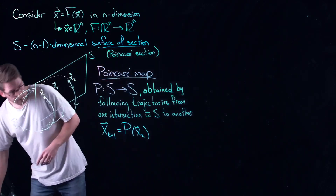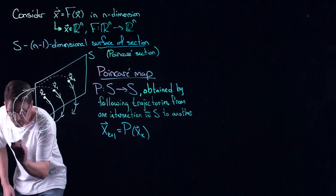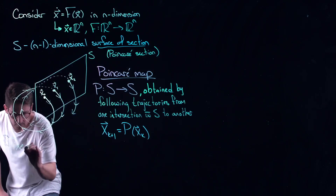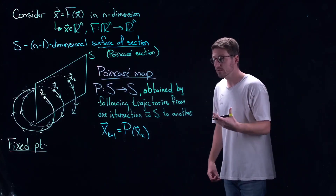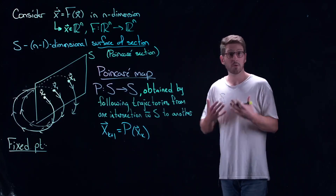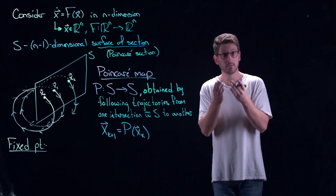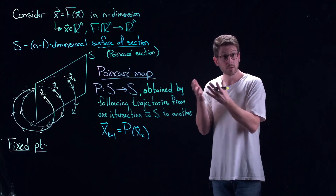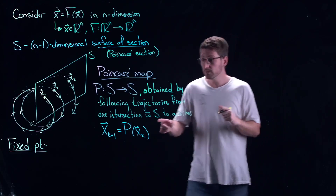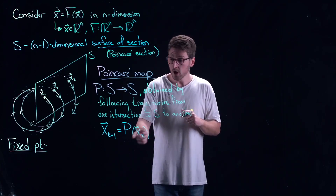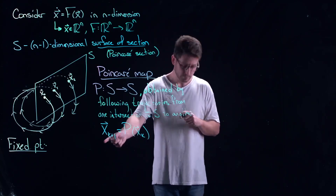Now let's think about some interesting things that could happen with this function. I would like to know what a fixed point of the function is. In continuous time, a fixed point means the time derivative is equal to zero — it's a constant solution. So what would a fixed point of a mapping be? It's a constant sequence — a point that goes into the map and comes right back out.